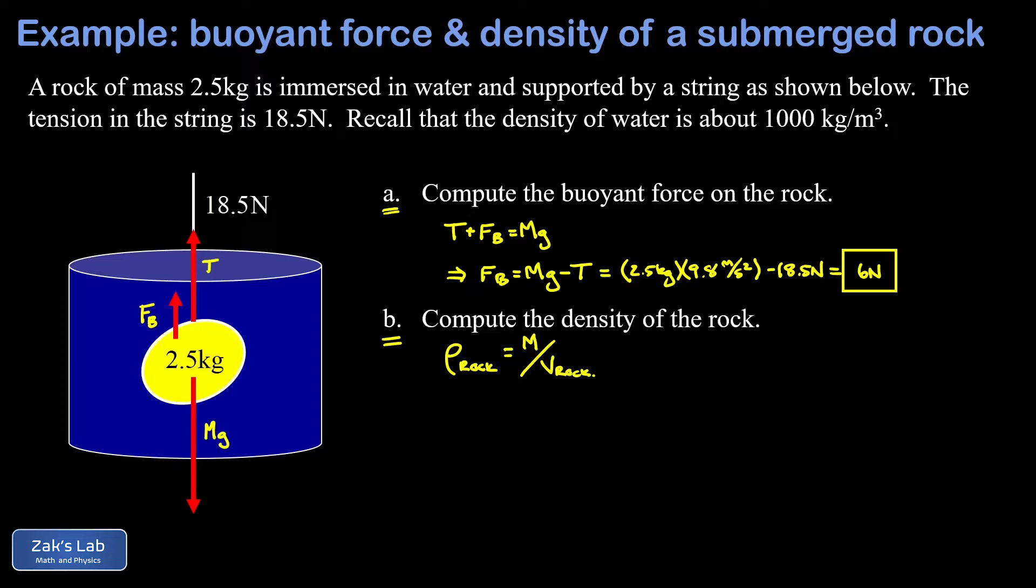Archimedes' principle tells us that the buoyant force is equal to the weight of the fluid that's been displaced as we submerge the rock. So by applying Archimedes' principle we should be able to nail down what the volume of the rock is, then we plug into the density formula and we've got our answer.